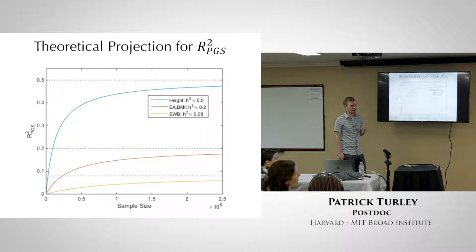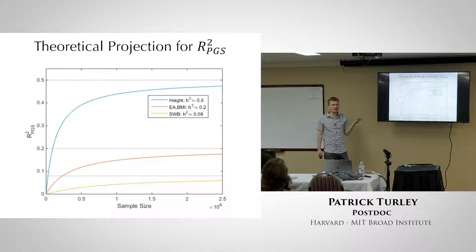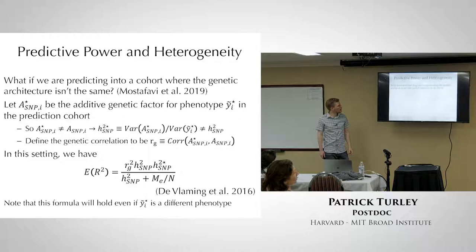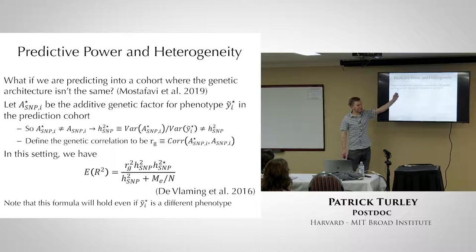The formula has been empirically validated — it tends to be quite close to what you predict once you take results out of sample. The previous curves correspond to SNP heritability, which is the maximum achievable with an infinite sample.